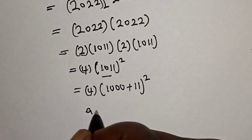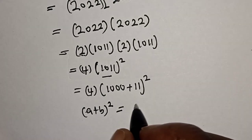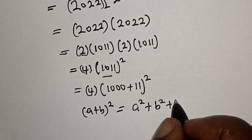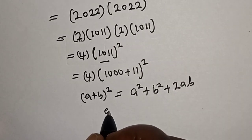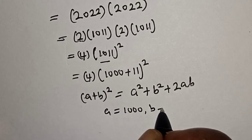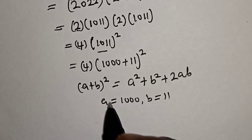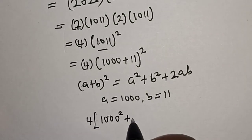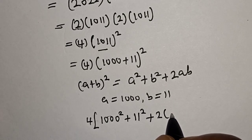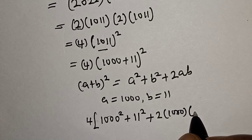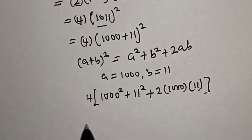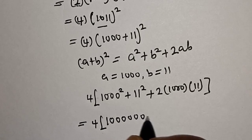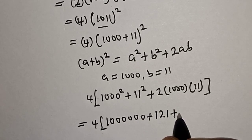Remember the exponential rule: (a + b) squared equals a squared plus b squared plus 2ab. Now a equals 1000 and b equals 11. Substituting, we have 4 into (1000 squared plus 11 squared plus 2 multiplied by 1000 multiplied by 11). This equals 4 into (1,000,000 plus 121 plus 22,000).